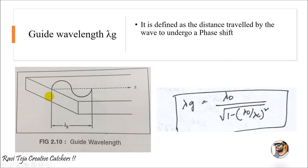The distance traveled by the wave along the z-direction in a waveguide as it shifts from the positive cycle to the negative cycle is the guide wavelength λg. It is given by λg = λ₀ / √(1 − (λ₀/λc)²).